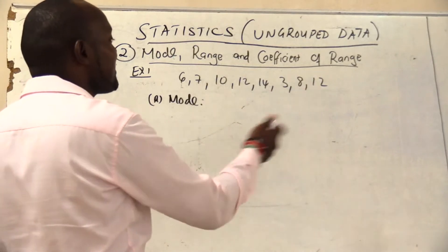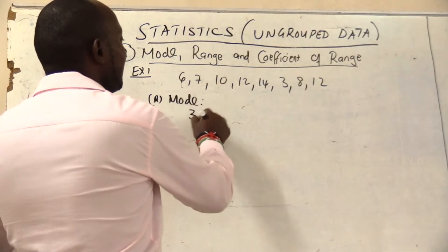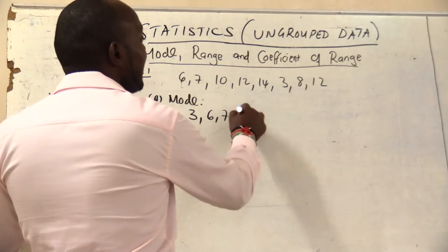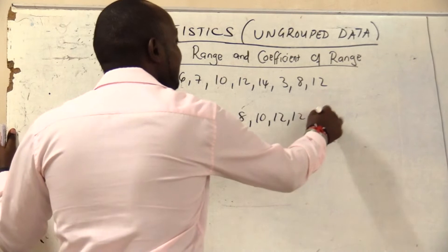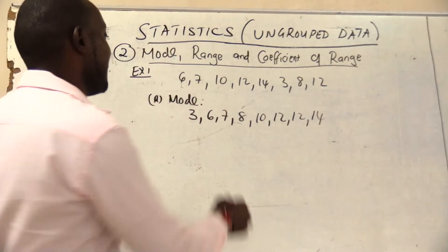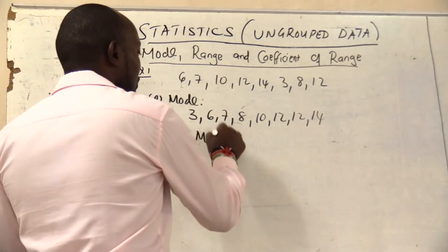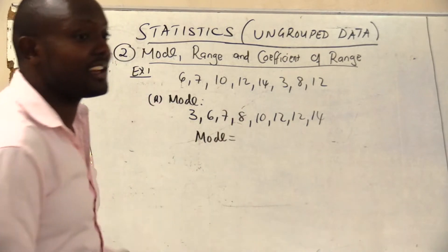So in this case you may arrange this data: you have 3, 6, 7, 8, 10, 12, 12, and 14. So what is the most occurring number? Mode is the most occurring number.